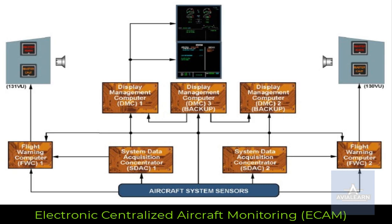The Flight Warning Computers, FWCs, the heart of the EECOM system, receive data from aircraft systems to generate red warnings and use the stacks to generate amber cautions. The FWCs then supply the DMCs for the display of alert messages, the attention getters, and the loudspeakers with oral alerts and synthetic voice messages.